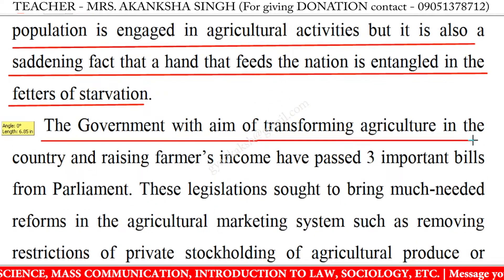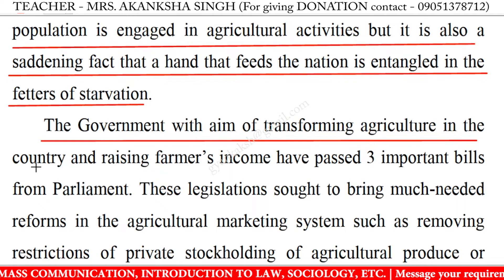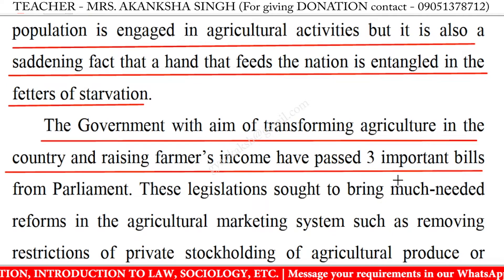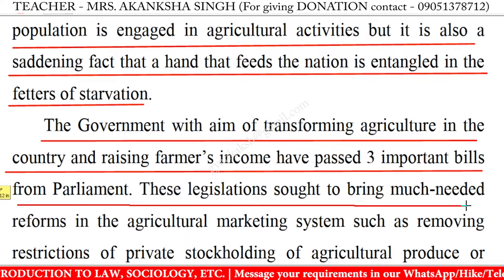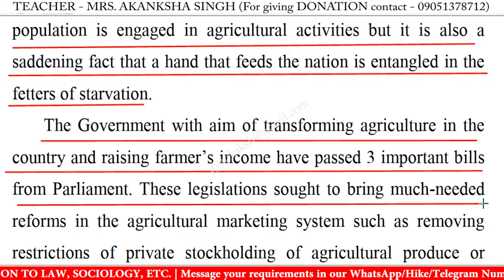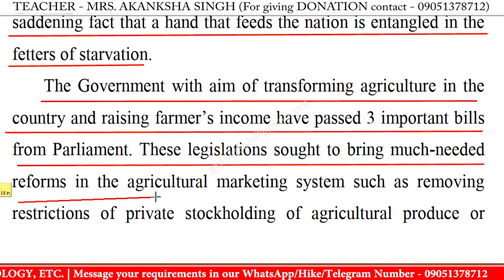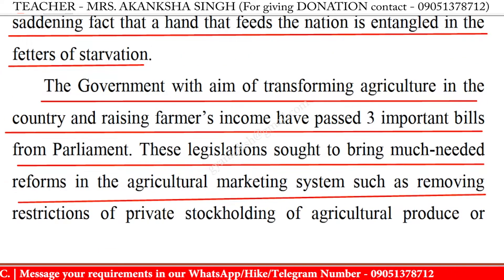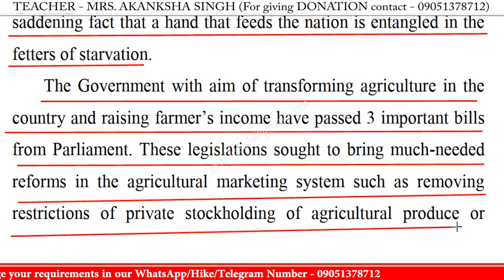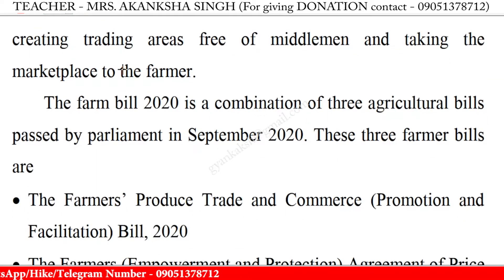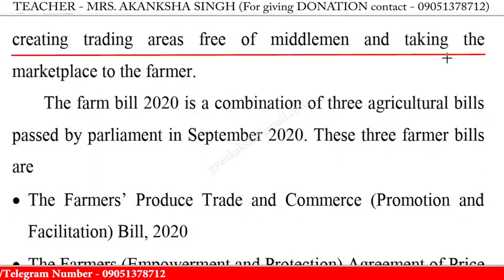The government, with the aim of transforming agriculture in the country and raising farmers' income, has passed three important bills from Parliament. These legislations sought to bring much-needed reforms in the agricultural marketing system, such as removing restrictions on private stock holding of agricultural produce, creating trading areas free of middlemen, and taking the marketplace to the farmer.